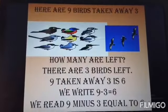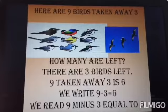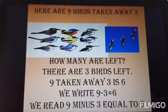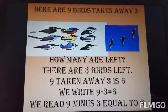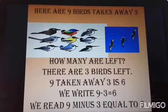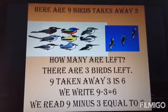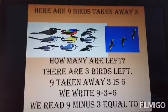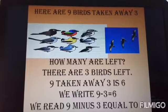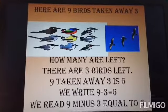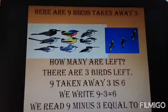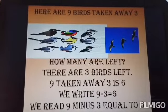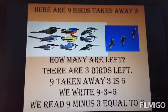Now we see the second example. Here are 9 birds; take away 3. How many are left? There are 6 birds left. 9 taken away 3 is 6. We write 9 minus 3 is 6. We read: 9 minus 3 is equal to 6.